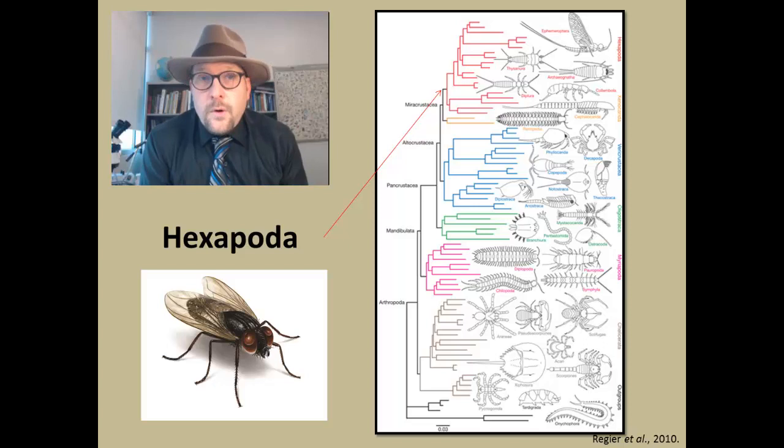The first group is the most diverse, the Hexapoda. These are animals that have six legs. They include true insects and flies, moths and butterflies—it is just a huge, very diverse group, including ants as well. Members of this group are extremely diverse, but they all have the same basic body plan.